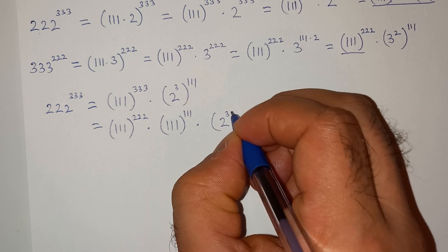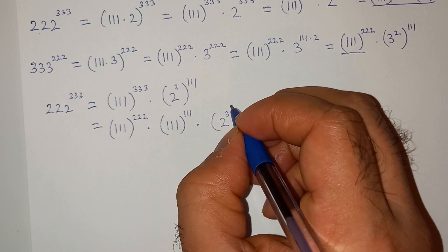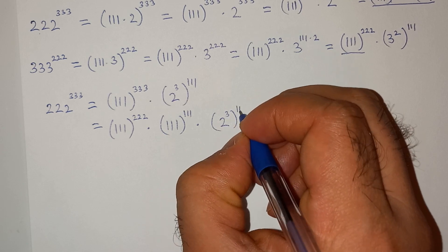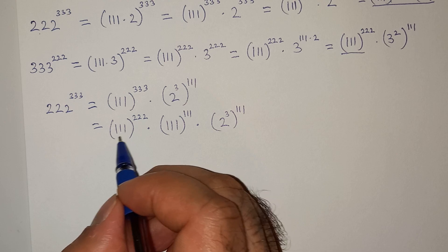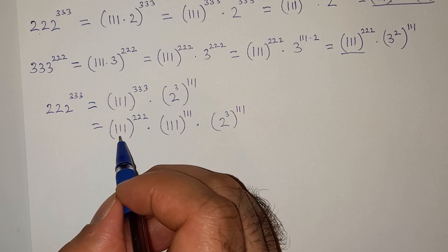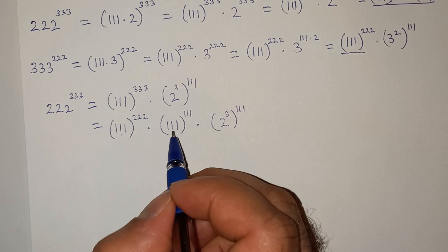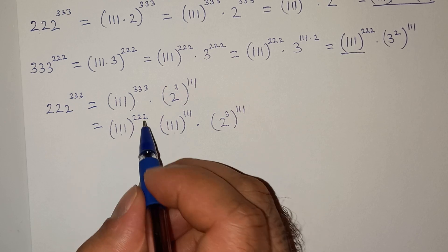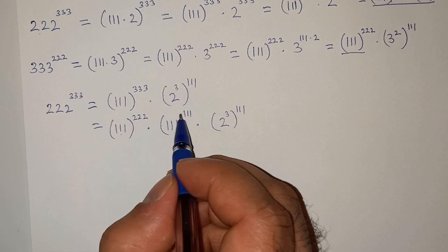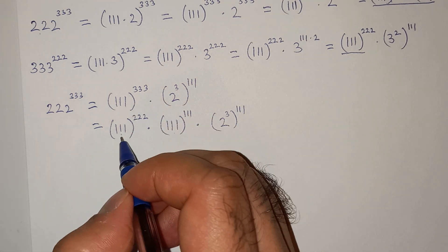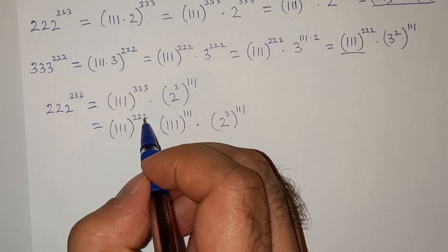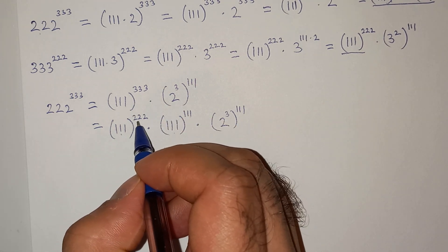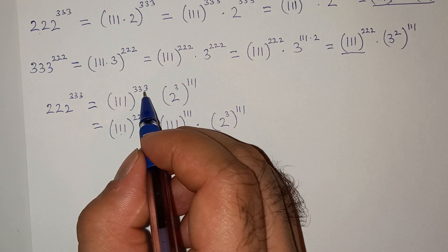Multiplied 2 cube power triple 1. So as you know that the base is the same, so the exponents should add. In this, the base is triple 1, and when we add this exponent triple 2 plus triple 1, it will give us triple 3.